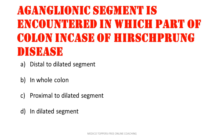Aganglionic segment is encountered in which part of the colon in case of Hirschsprung disease: distal to dilated segment, in the whole colon, proximal to dilated segment, or in the dilated segment? The answer is distal to dilated segment.